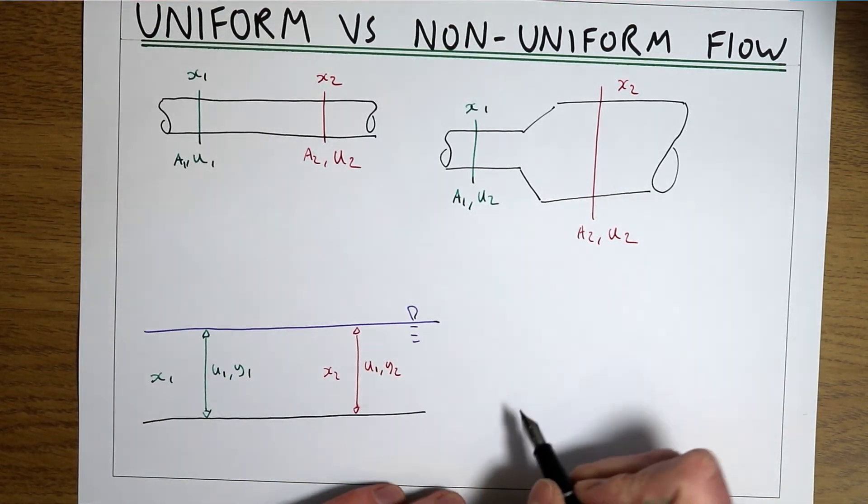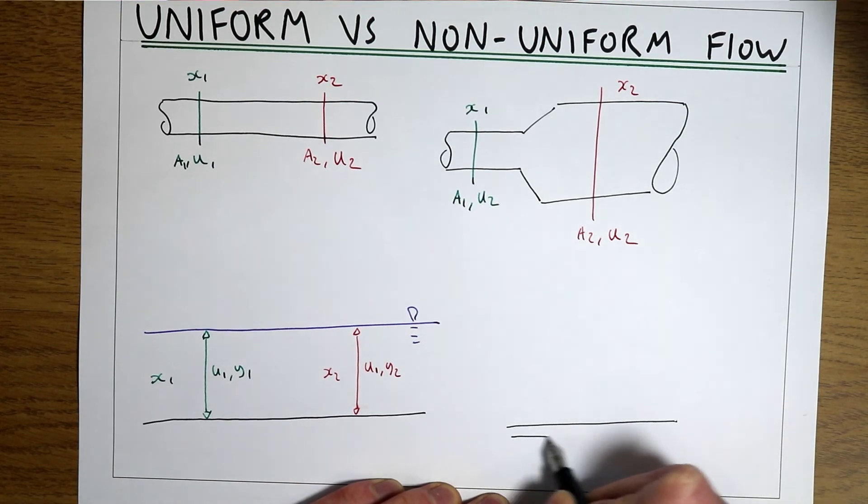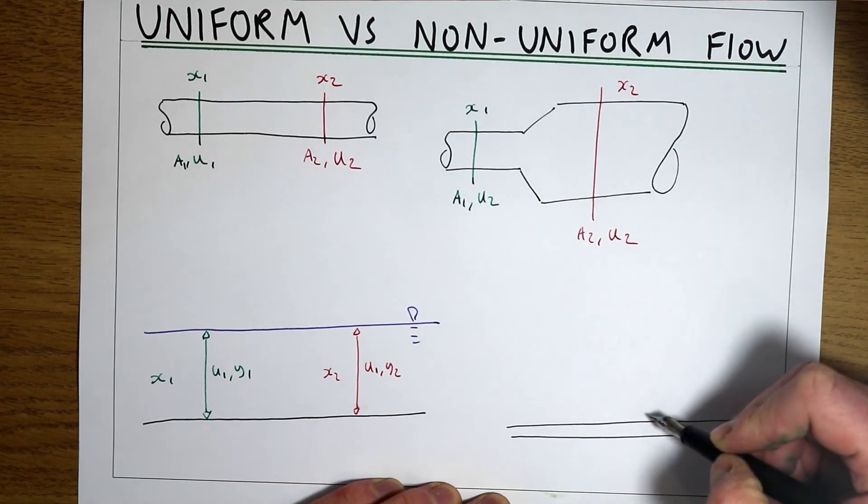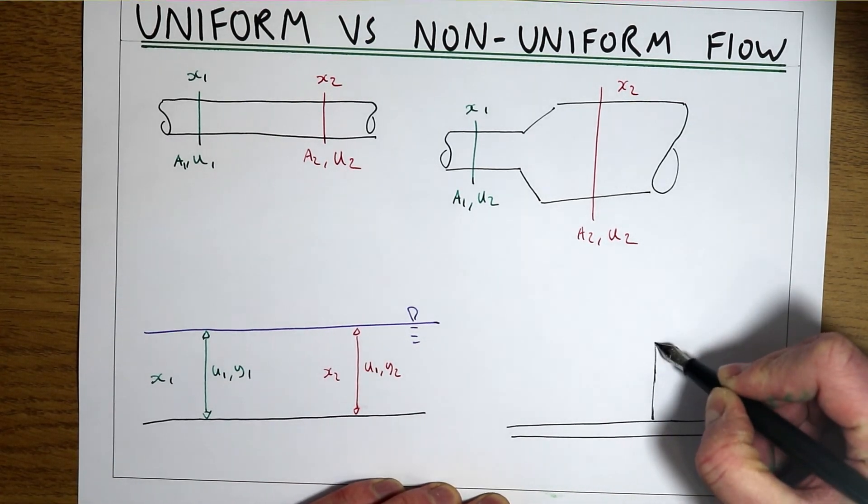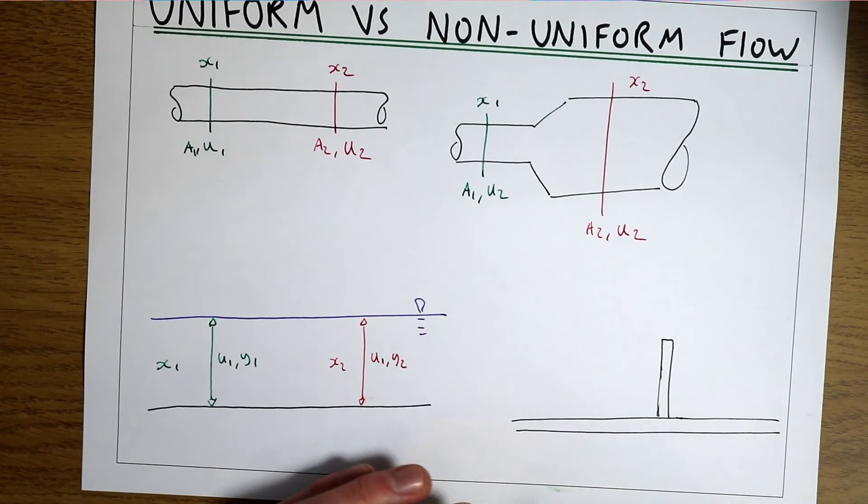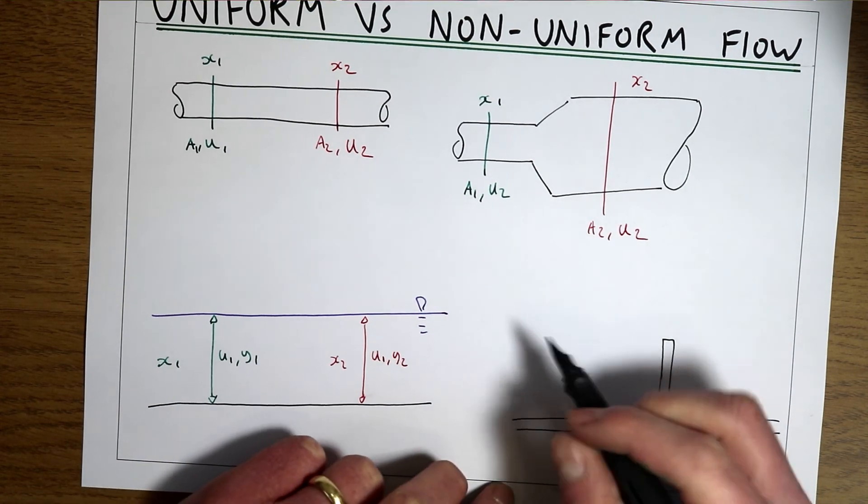If however we took that open channel flow and we put a weir in the way, then that's now going to give us non-uniform flow because the flow parameters are now going to change with distance.